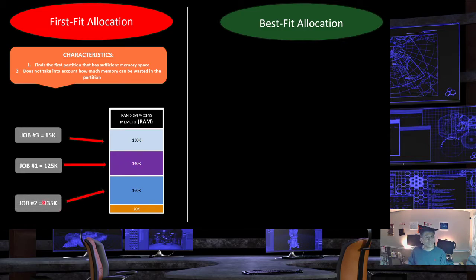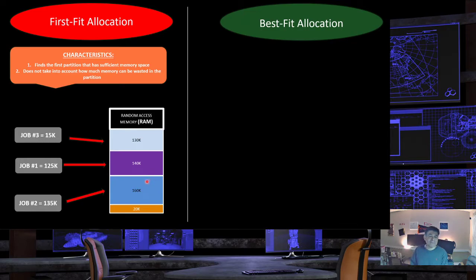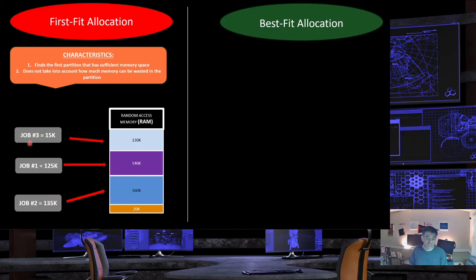Job two requires 135K to execute but utilizes a 160K partition. This job could easily use the 140K partition instead; however, by using the 160K partition, more memory is wasted. With first fit allocation, jobs are not looking for the smallest partition that can accommodate them — they just quickly find the first partition large enough to execute the job's instructions.